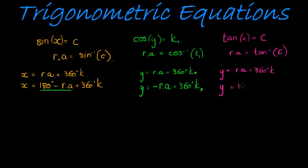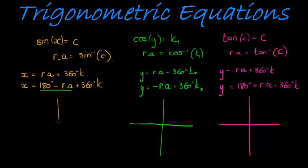or 180 degrees plus the reference angle plus 360 degrees times k. The thing about tan that is different from the other two: For sine, if c is positive, the solutions lie in the first and second quadrants. Plus 360 gets us back to those quadrants. For cosine, the solutions lie in the first and fourth quadrants.